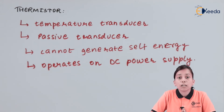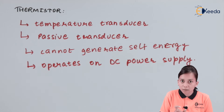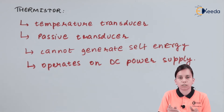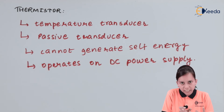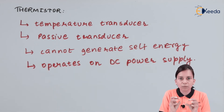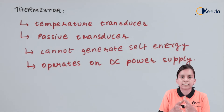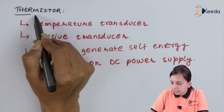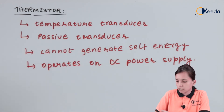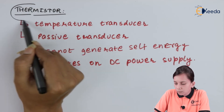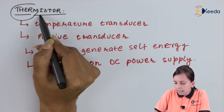Now if we look at the word 'thermistor,' it comprises two words. First is 'thermal' and second is 'resistor.' So basically, thermistor is a combination of thermal and resistor.